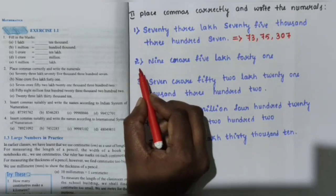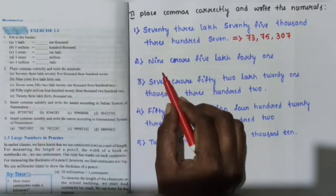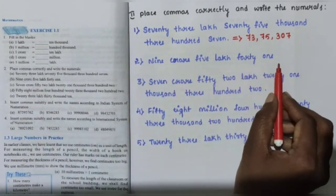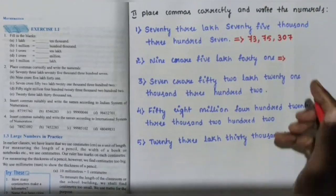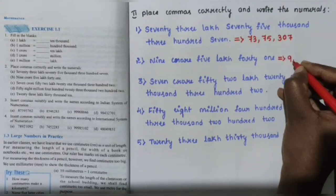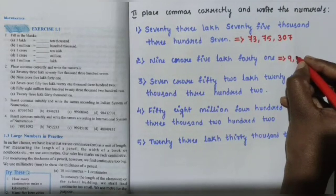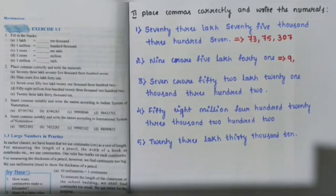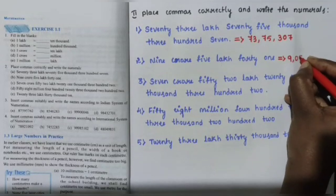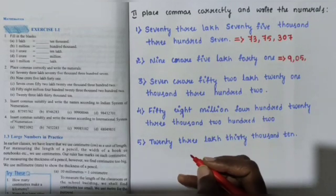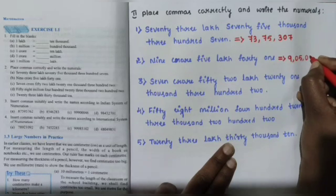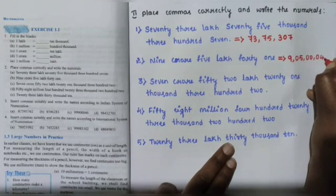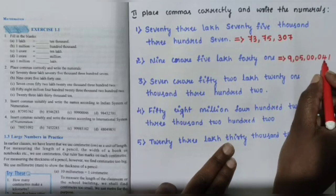Question number 2: 9 crore 5 lakh 41. Write in numerals: 9 crore is in the crore place, 5 lakh is in the lakh place, the 10 lakh place is 0, the thousands place is 0, the hundreds place is 0, then 41. So the answer is 9,05,00,041.